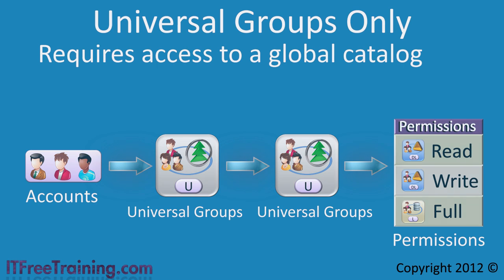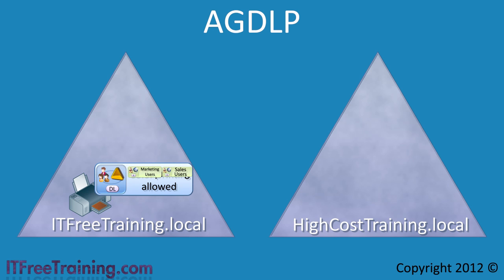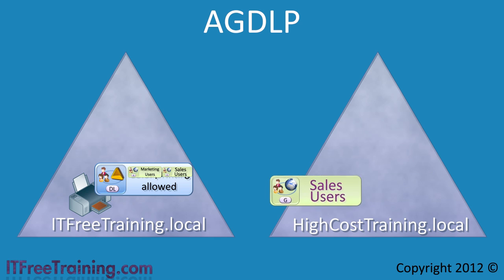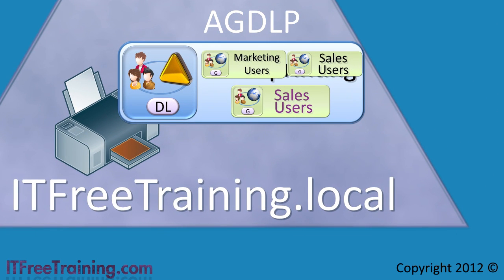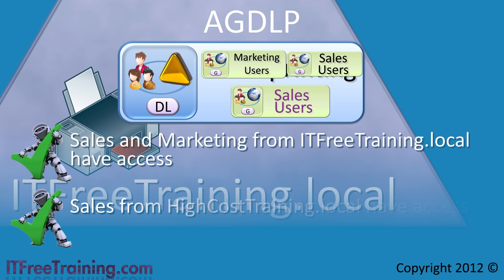Let's look at what happens when I add an extra domain in the mix and use AGDLP. If you wanted to provide access to a user or group from another domain, the only place this could be added would be in the domain local group. Following the strategy, let's say that the sales global group from the high cost training domain is added to the domain local group that controls color printing access. When it comes time to audit who has access to color printing, we now know that sales and marketing from this domain and also the sales staff from the high cost training domain are able to use the color printers. AGDLP can be used in a single domain and a multiple domain environment to control access, and access can be quickly changed and audited.